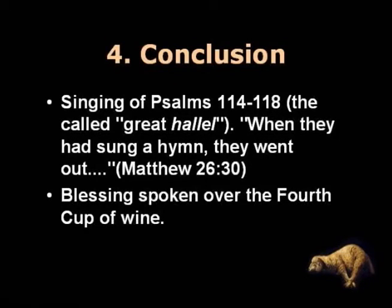Then the fourth part, the conclusion of the meal: the group would sing together Psalms 114 to 118, called the great Hallel, recalling the words in Matthew 26:30: When they had sung a hymn, they went out to the Mount of Olives. And then finally, the blessing spoken over the fourth cup of wine. If this outline of the Passover meal at the Last Supper is accurate, then Jesus' words about the bread being his body and the cup being his blood are immediately adjacent to the eating of the Passover lamb. I can't escape the conclusion that Jesus' words were interpreted by his disciples — and probably intended by Jesus — to be understood in relation to the Passover lamb. Clearly, the early church thought of Jesus as the Passover or Paschal Lamb that had been sacrificed, as our theme verse 1 Corinthians 5:7 indicates.